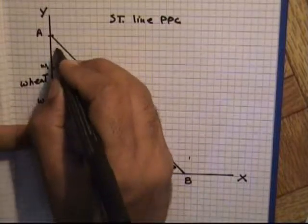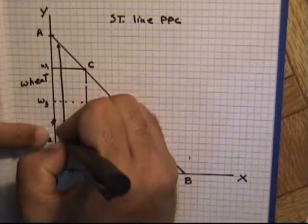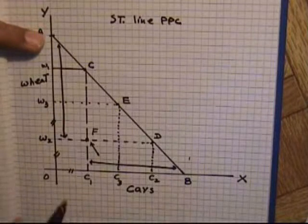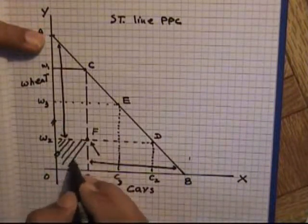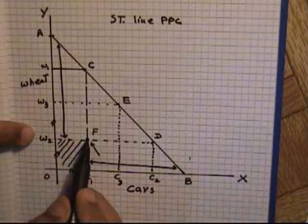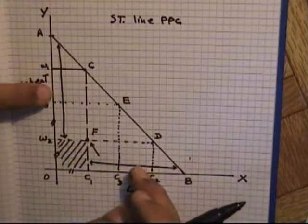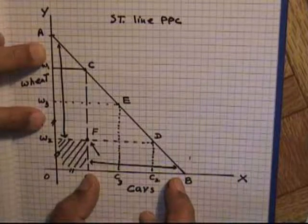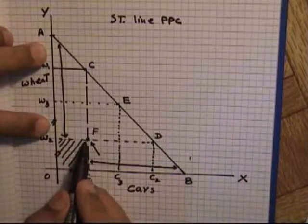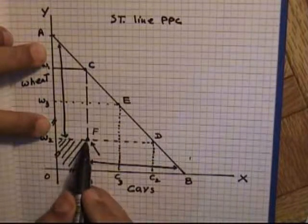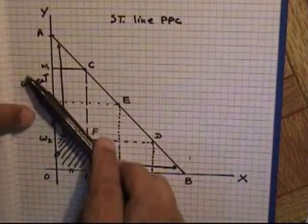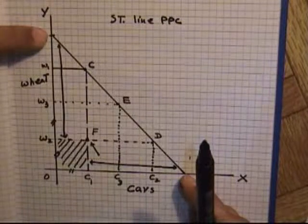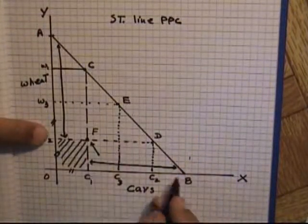If the country is producing at point F, a large number of resources — land, labor, machinery — are unemployed. Due to less demand and less requirement in the country, the country is not bringing production to the optimum level on the curve. Therefore, resources in this country will be unemployed.